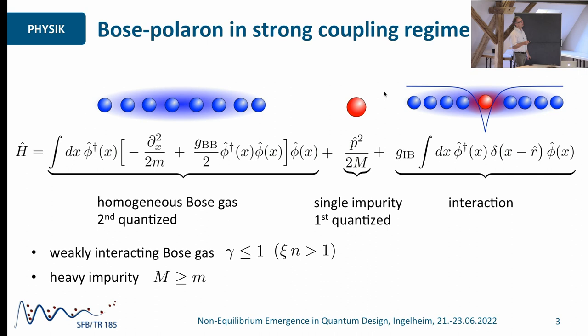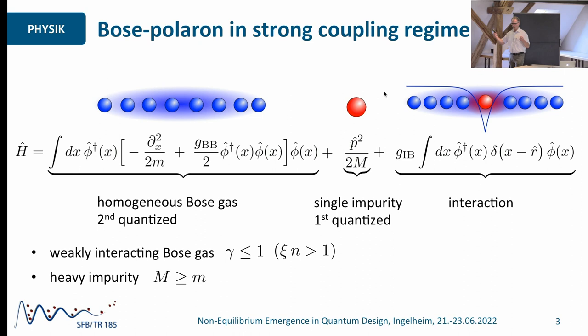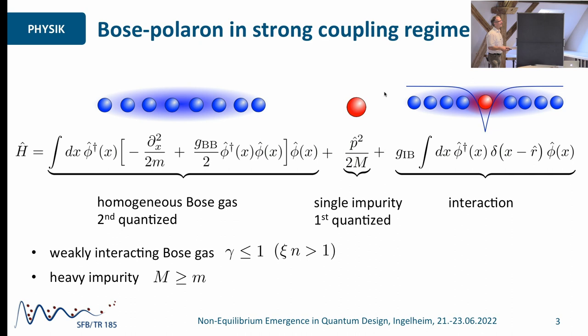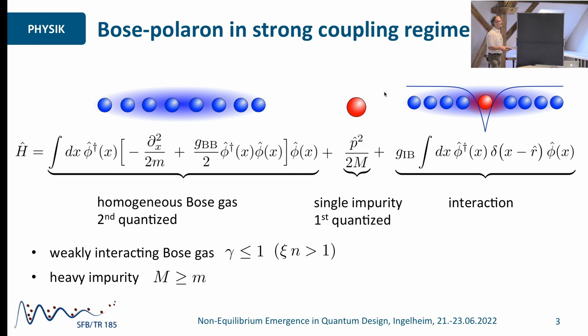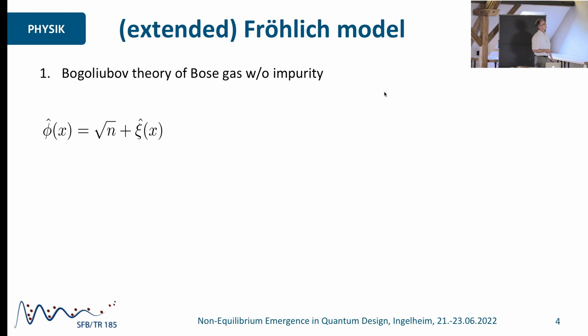The second thing I also want to assume is that the mass of the impurity is sort of large, at least of the order of the surrounding bosons. The reason being that if you consider collisions between a background boson and the impurity, and then the impurity hits another boson, you want this process to be not that very important. But what I would like to look at is a system where you have strong interactions between the impurity and the condensate. This can be quantified in terms of the impurity-boson interaction strength being much, much larger than the boson-boson interaction strength times this dimensionless number of healing lengths and 1D density.